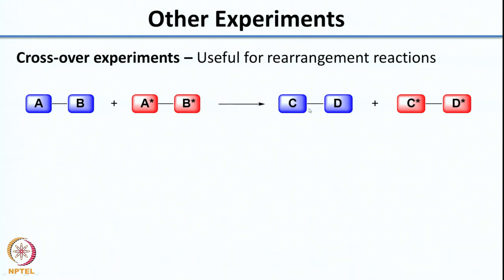One very commonly used experiment is what is called a crossover experiment, typically used for rearrangement reactions. Say you have a reaction AB which leads to CD. A very similar competing reactant A*B* is added. If the reaction is intramolecular — meaning A and B rearrange within themselves to give CD — you would see only 2 products: one corresponding to the rearrangement of AB and the other to the rearrangement of A*B*.